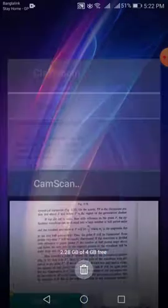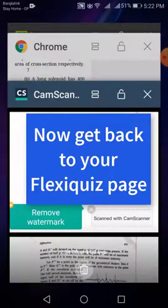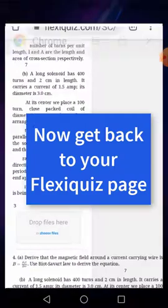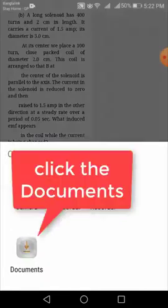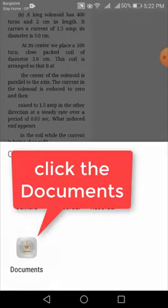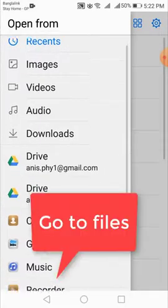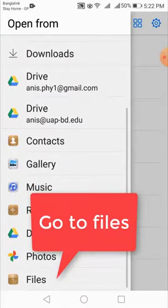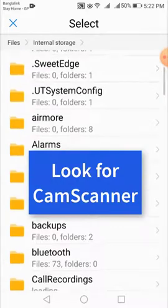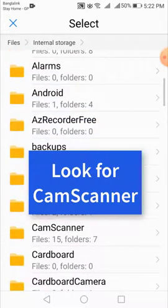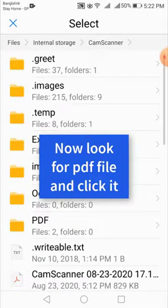Now minimize it. Now go to the quiz site and choose file here. Go to Files, Internal storage. Look for CamScanner. Here is CamScanner and PDF file.